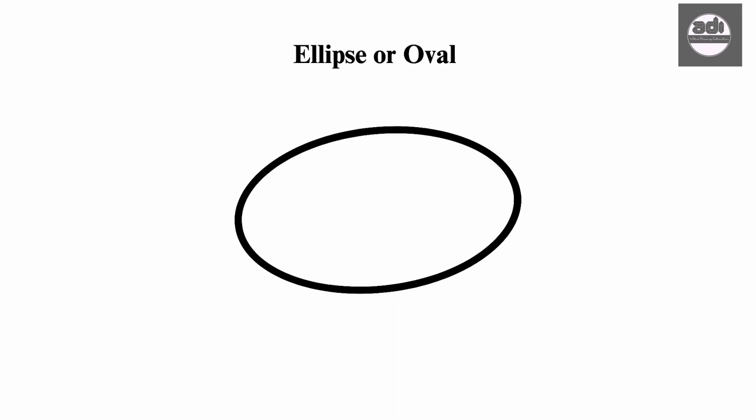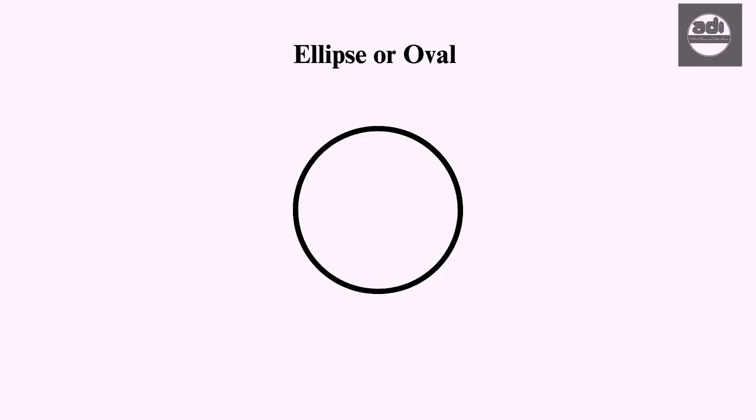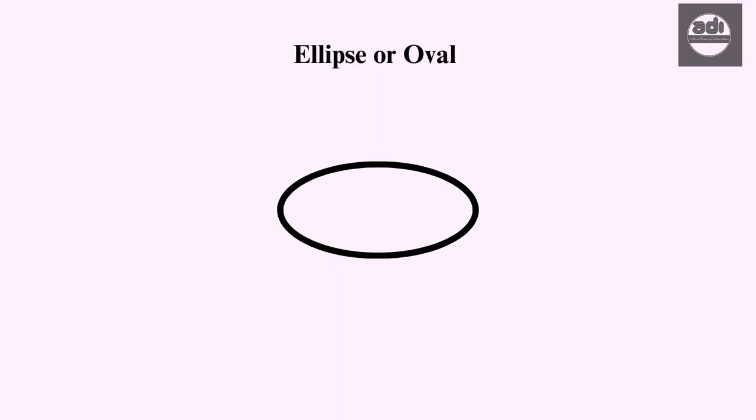An ellipse is an oval which is mathematically defined. Think of an ellipse as a circle observed from a different perspective or angle.